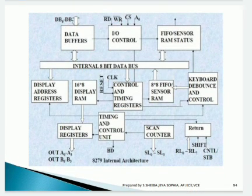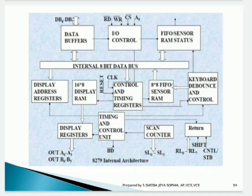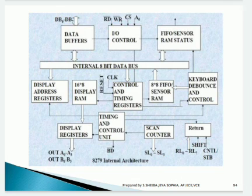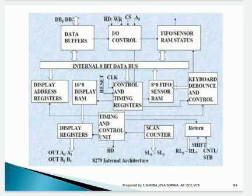The architecture of 8279 has an internal 8-bit data bus corresponding to data buffer pins DB0 to DB7 — 8 pins. Control pins include read, write, chip select, and address pins. There are also 4 scan counter pins corresponding to the scan line section, and return lines RL0 to RL7, shift control, and control and timing unit pins, as well as display registers for displaying the 8-bit output.